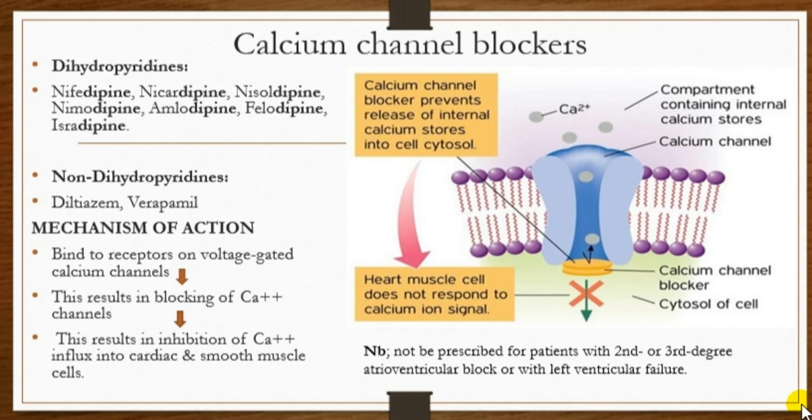Before we look at the mechanism of action, let's see how heart muscles contract. In working atrial and ventricular fibers, calcium moves into the muscles during the plateau phase of the action potential. This causes release of more calcium from the sarcoplasmic reticulum, which is the internal calcium store. The calcium then passes through the calcium channel into the cytosol.